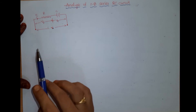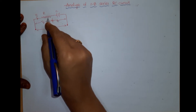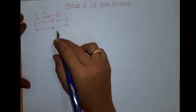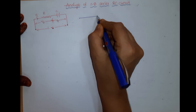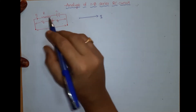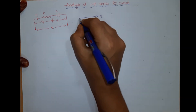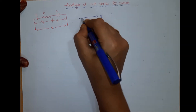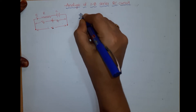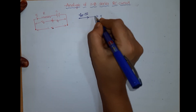Now coming to the phasor diagram or phasor representation, we know that the total current flowing through both these elements is the same. So to draw the phasors of this circuit, I am taking the reference as current. The total current I am taking as reference. We know that the voltage across the resistor is in phase with the current through the resistor, so the voltage across a resistor will be in phase. Vr is equal to I into R, and this is in phase with the reference current I.